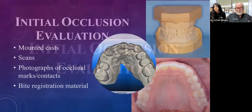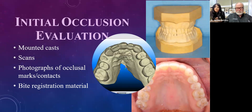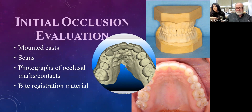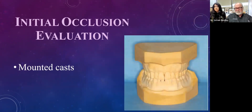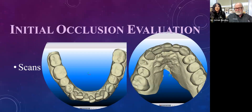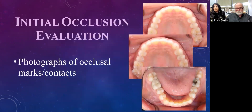So how do we do this initial occlusal evaluation? It doesn't have to be complicated. Mounted casts is one way — good impressions properly articulated are invaluable, though wear over time can be an issue. We can take intraoral scans to maintain information in the exact shape the patient presented with. Photographs of occlusal marks or contacts — in different colors of articulating paper — are also a great documentation tool.